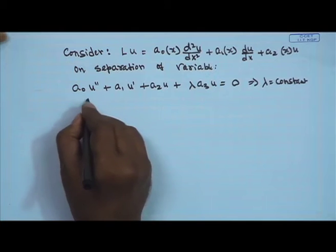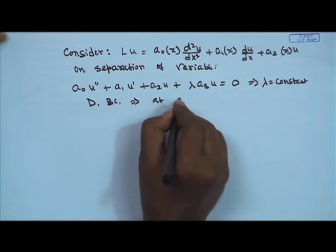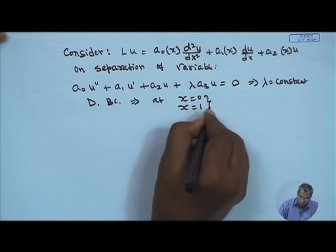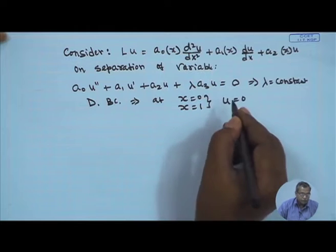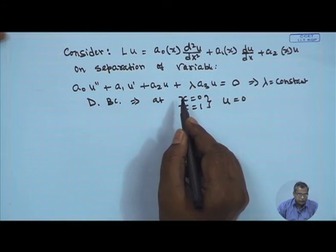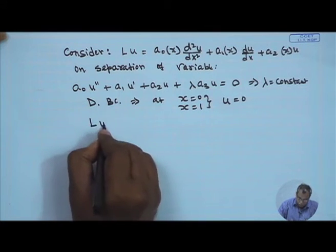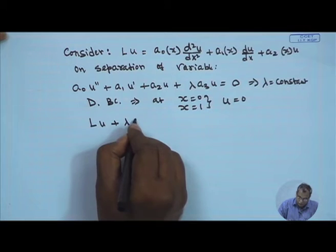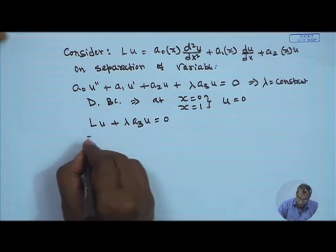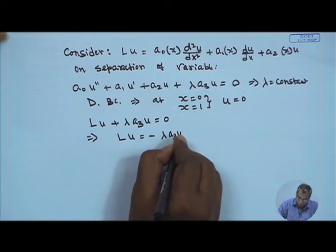Let us assume the Dirichlet boundary condition: at x = 0 and x = 1, u = 0. This equation can be written in compact form as Lu + λa₃u = 0, or equivalently Lu = -λa₃u.